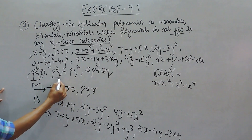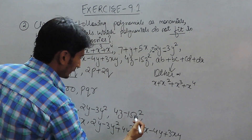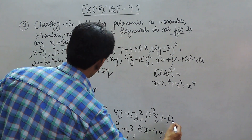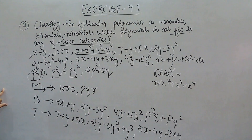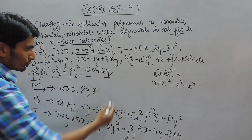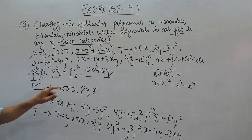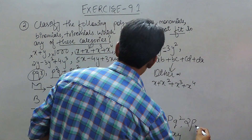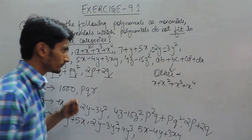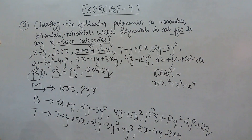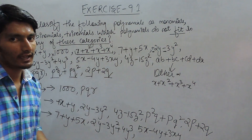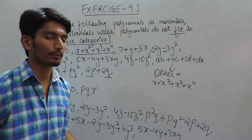And in this we are having two terms, so this should be binomial — p²q³ plus p³q². And the last one, again, having two terms, so this should also come in the category binomial, which is 2p plus 2q. So simply, if you want to find the monomial, binomial, or trinomial, we have to find the number of terms a certain expression has, and that is how you can find which category they belong to. Thank you.